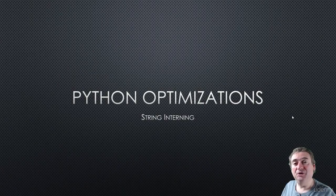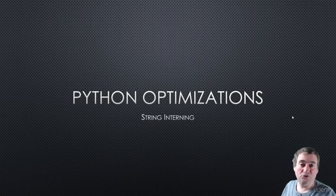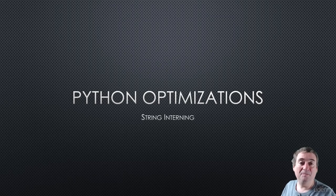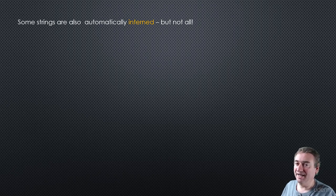Hi, and welcome to this video that continues our series on Python optimizations. In particular, we're going to look at something called string interning. We've seen interning before in the last video — Python automatically interns a certain range of integers. But some strings are also interned by Python, but not all. It's really important to understand that not all strings are interned.